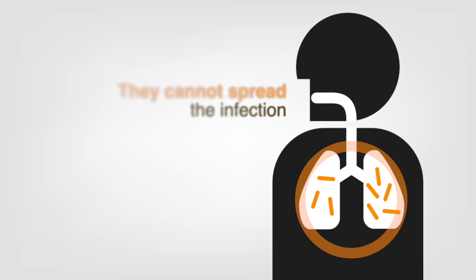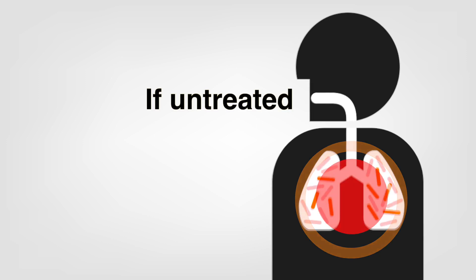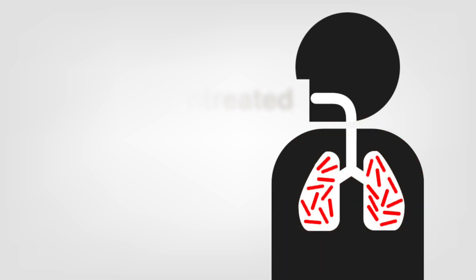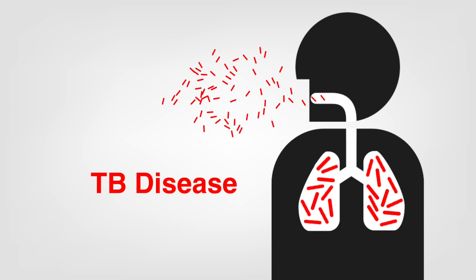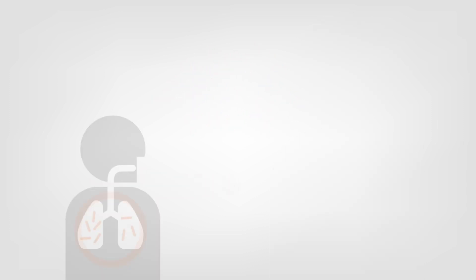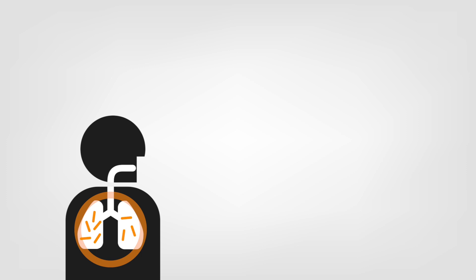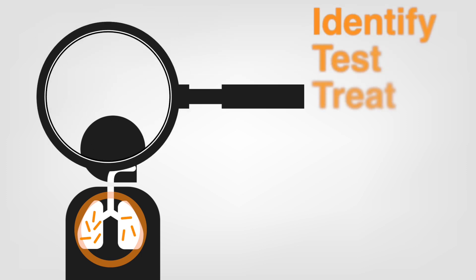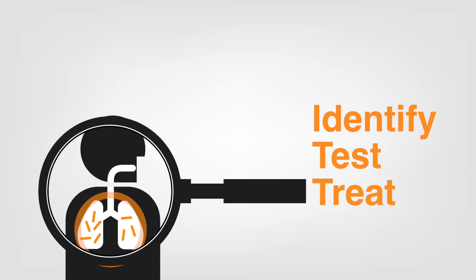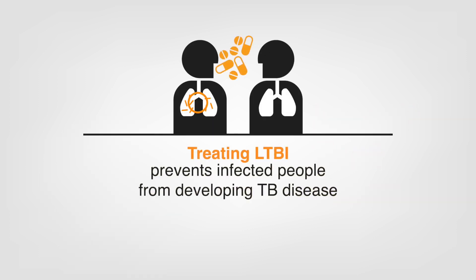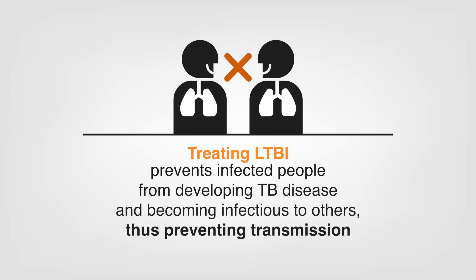However, there is a risk that if untreated, the bacteria will overcome the body's immune defenses and multiply, causing the person to become ill with TB disease. Since there is a risk that people with LTBI will develop TB disease later in life, it is important to identify those at risk for LTBI, test them, and treat those who are infected. Treating LTBI prevents infected people from developing TB disease and becoming infectious to others, and thus helps prevent transmission of the disease.